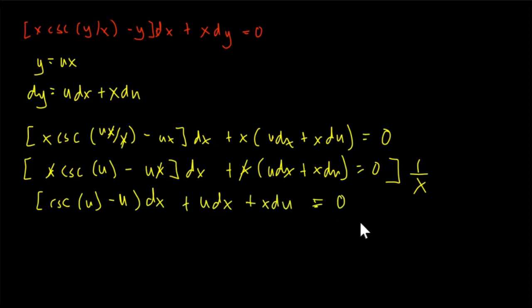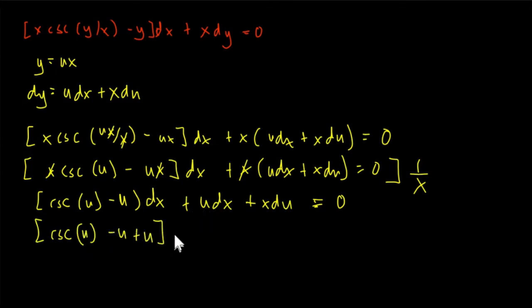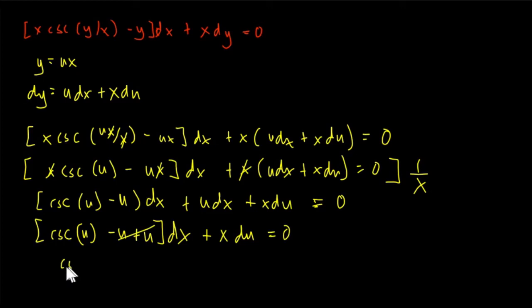Combining terms with the same dx: cosecant(u) minus u plus u — the u terms cancel out. So we end up with cosecant(u) dx plus x du equals 0.